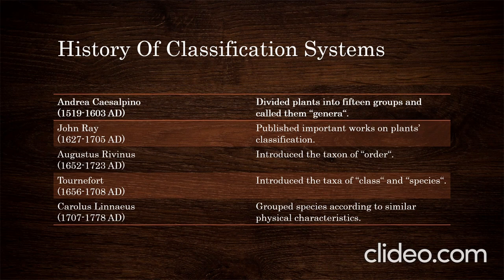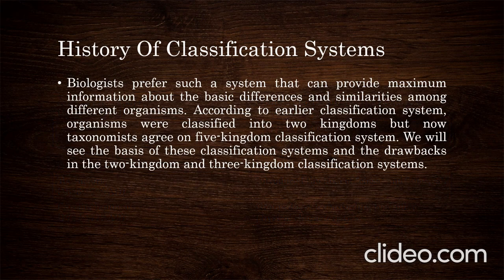Biologists prefer a system that can provide maximum information about the basic differences and similarities among different organisms. According to the earlier classification system, organisms were classified into two kingdoms, but now taxonomists agree on a five-kingdom classification system. We will see the basis of these classification systems and the drawbacks of the two-kingdom and three-kingdom systems.